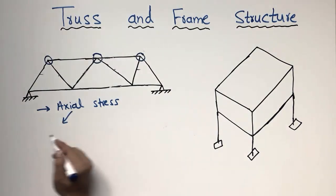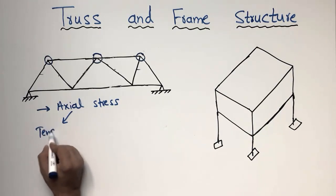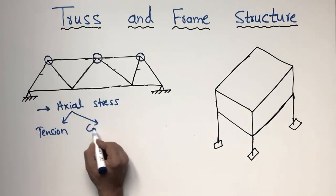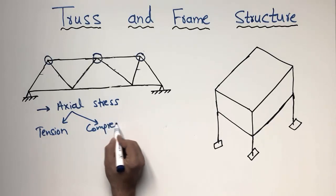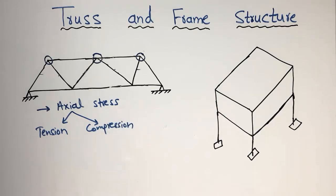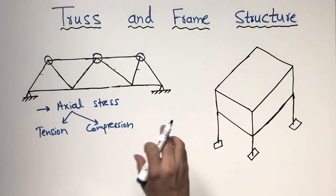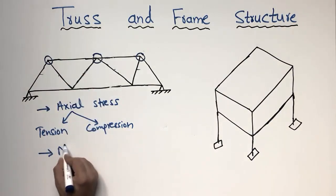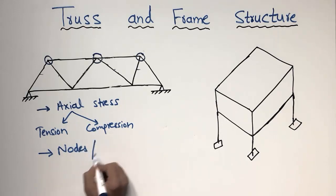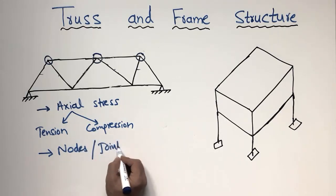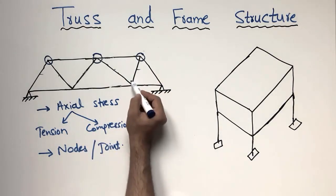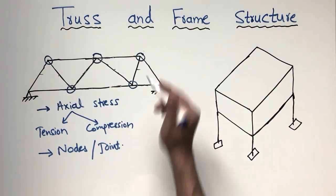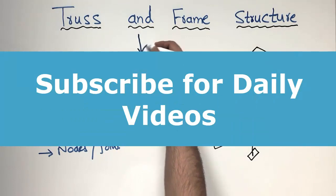Axial stresses mean that your truss member is either subjected to tension or compression — there is no bending or shear. The loads are always applied on the nodes, and the nodes and joints are the same thing. You can see here these are the nodes and joints, and loads are always being applied here.